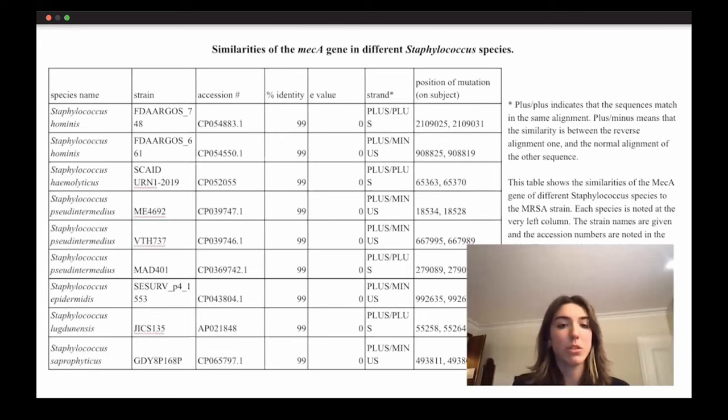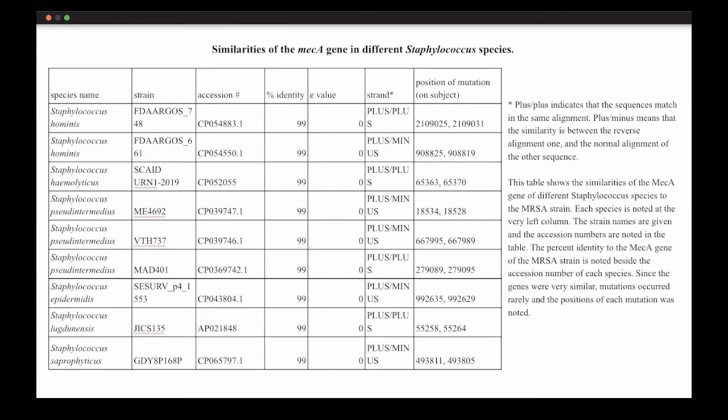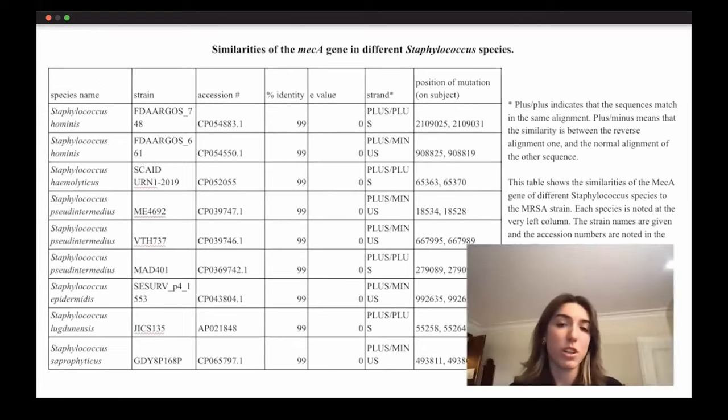And in the next table, I have the similarities of the mecA gene in different Staphylococcus species. This doesn't have to be Staphylococcus aureus, and as you can see, the e-value is really, really small here as well, and that indicates that there's a huge similarity between the mecA genes of all these species, especially in the Staphylococcus species. The gene would be transferred by horizontal gene transfer without having any major mutations in the gene. The fast spread of this gene is actually really dangerous for humanity, because infections could not be treated.